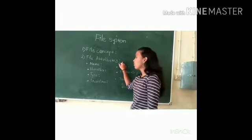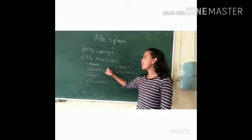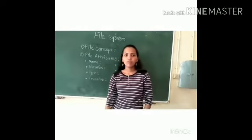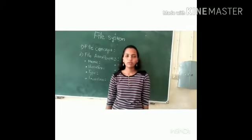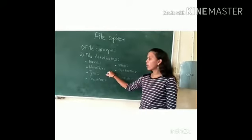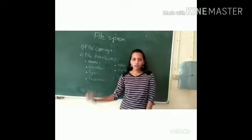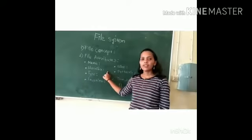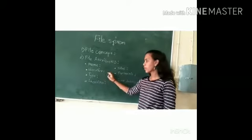The second point is file attributes. The first attribute is a name. The symbolic form of a file is only information-like, in a human-readable form. The second attribute is an identifier — it is a unique tag, usually a number, in a non-human-readable form — the file name.